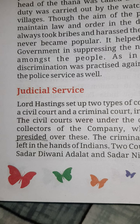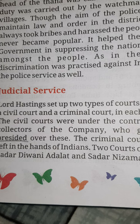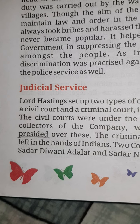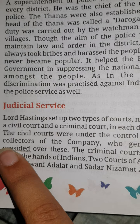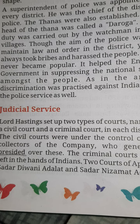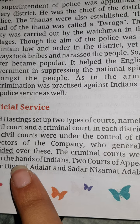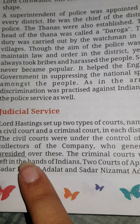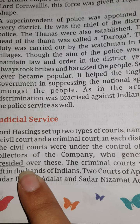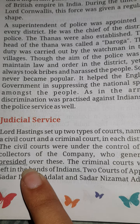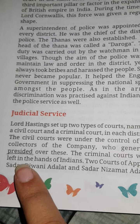Lord Hastings set up two types of courts, namely a civil court and a criminal court in each district. The civil courts were under the control of the collectors of the company, who generally presided over these — that is, they were in charge of the civil court. The criminal courts were left in the hands of Indians.